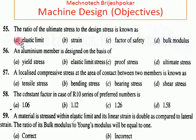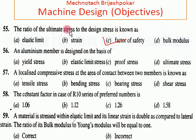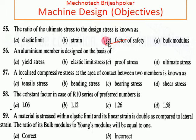The ratio of ultimate stress to design stress is known as the factor of safety. Factor of safety equals ultimate stress divided by design stress. Since ultimate stress is always higher than design stress, the factor of safety is always greater than or equal to 1. An aluminum member is designed on the basis of...